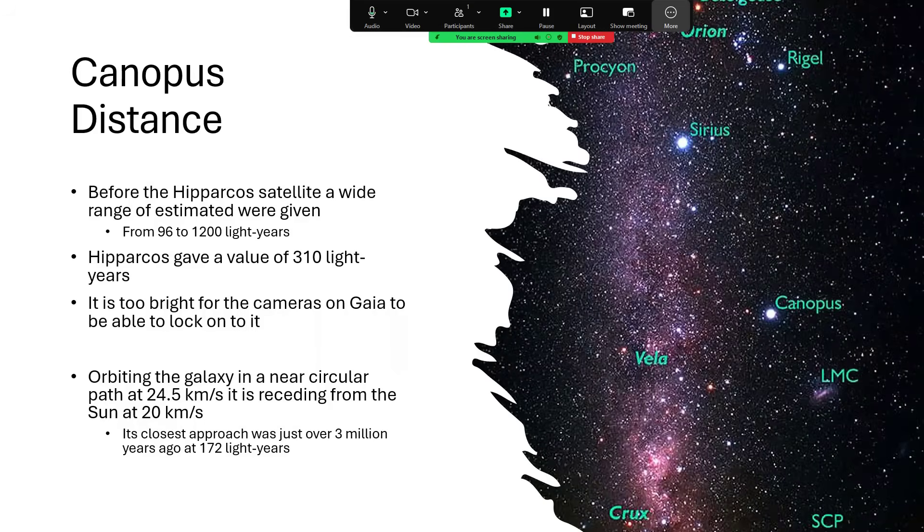Now, before the Hipparcos satellite was sent up and used the parallax method to try to pin down the distances to a whole range of stars in the relatively near part of the universe, out to about 500 light years, estimates of the distance to Canopus varied wildly. They went from 96 all the way to 1,200 light years.